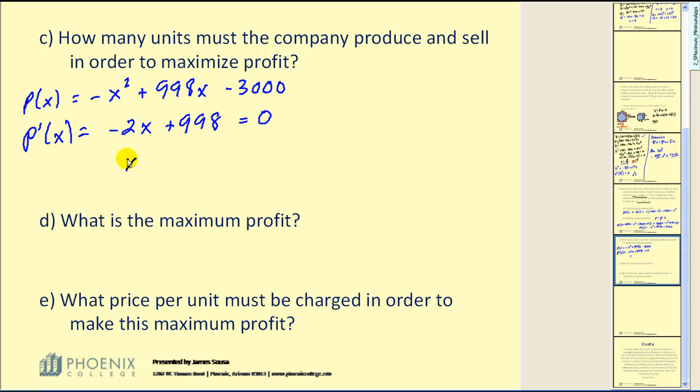Of course, the solution to this equation is x equals 499. Now, just to be sure that this is where the maximum profit would occur, we should find the second derivative, which would be negative 2, meaning the function is always concave down, which means that the critical number of 499, we do have a maximum.